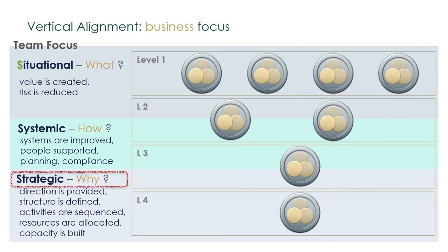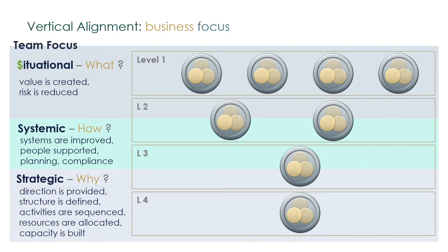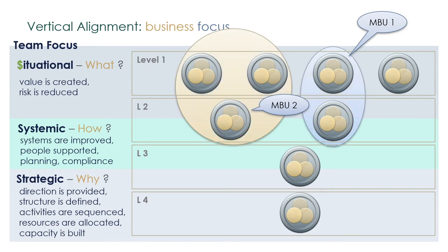Let's summarise the layers. The strategic layer answers 'why do we do what we do?' The systemic layer answers 'how do we do what we do?' And the situational layer answers 'what do we do?' Examples of level 1 teams include a production team weaving carpets, journalists in a newsroom producing news feed, or people interacting with customers in a call centre. MBU level 1 teams meet daily to review the previous day's performance, find root causes and solutions, and plan for the current day. Team leaders then meet with their manager daily in MBU 2 to ensure level 1 teams get the support required to operate efficiently. The level 2 team is usually cross-functional, enabling cross-functional issues to be addressed immediately.